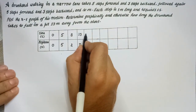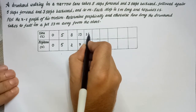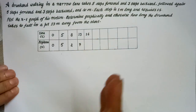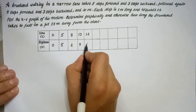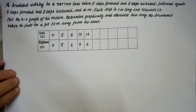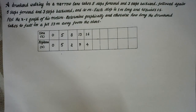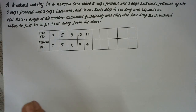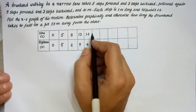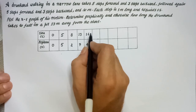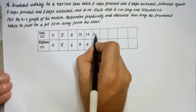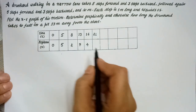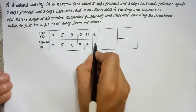In the next 3 seconds, that is at the 13 plus 3 equals 16th second mark, the displacement is 4 plus 5 equals 9 meters, as the person moves 5 meters forward.